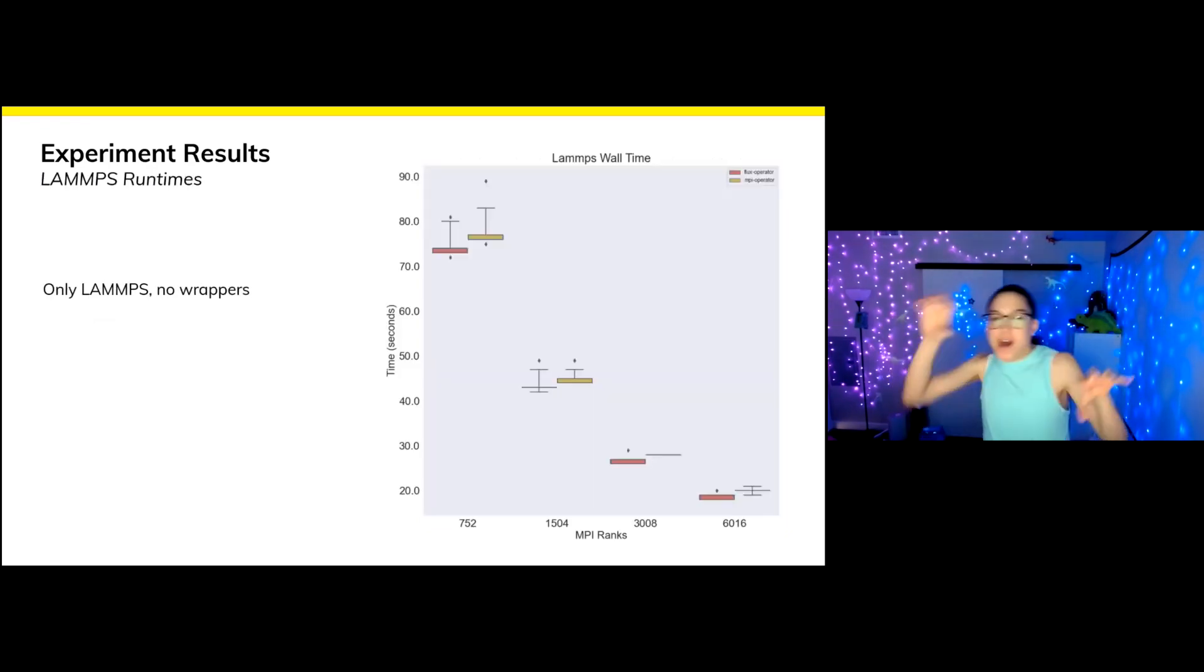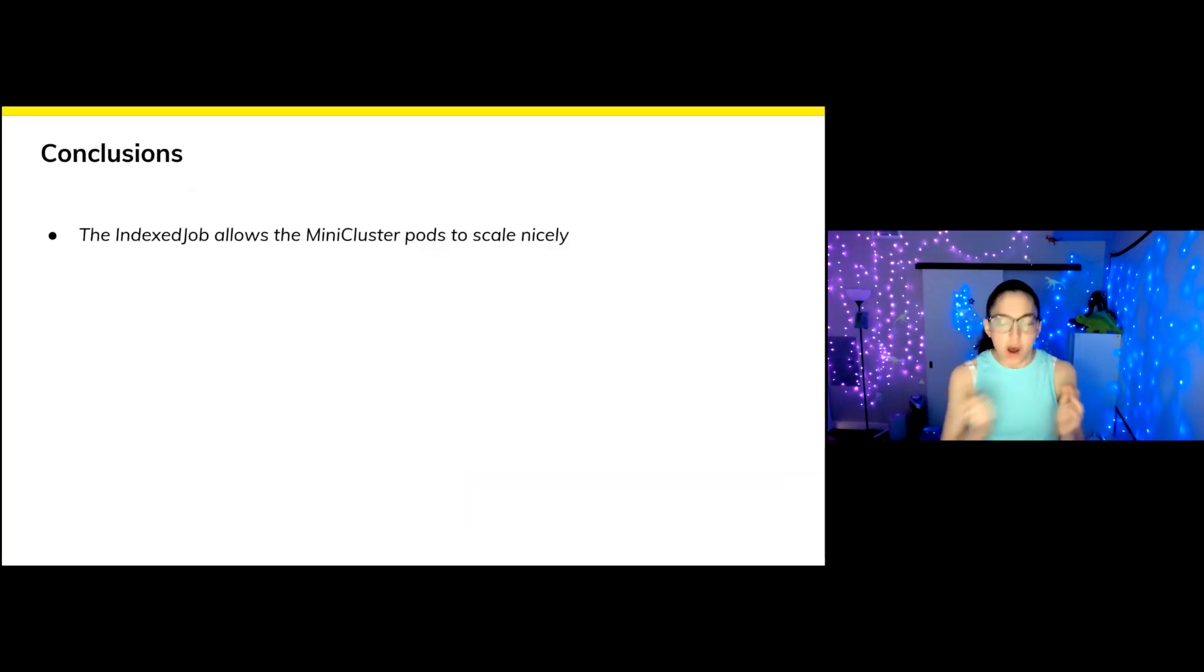So when we peel back another layer of the onion and we look just at the LAMMPS time reported by LAMMPS, so no wrappers, we again see the differences get even smaller. But if you visually look at the medians, they're about 10% lower for flux. And we think that for larger workloads, this could potentially translate to cost savings.